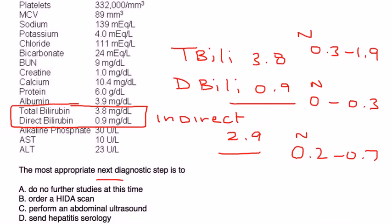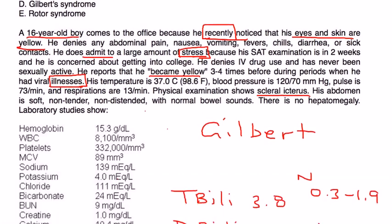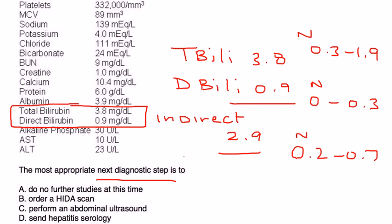The clinical vignette points strongly toward Gilbert syndrome. The key phrase is that he 'recently noticed' the jaundice — he was normal and then suddenly developed it. Gilbert syndrome is normally asymptomatic and benign, except for jaundice that occurs in states of stress or illness, both of which are described here. There is no treatment necessary. The answer to this question is A: no further studies at this time.